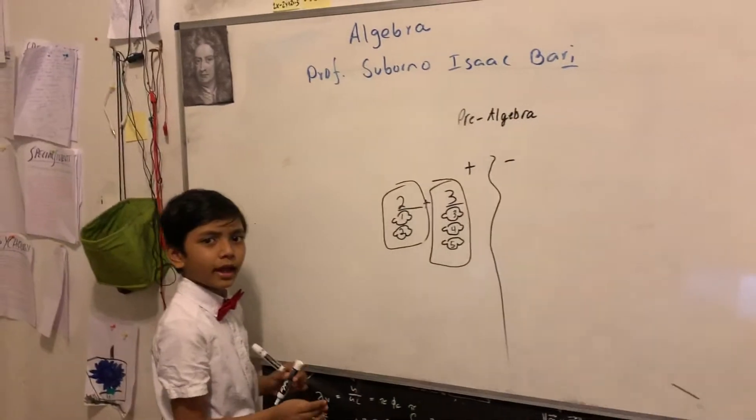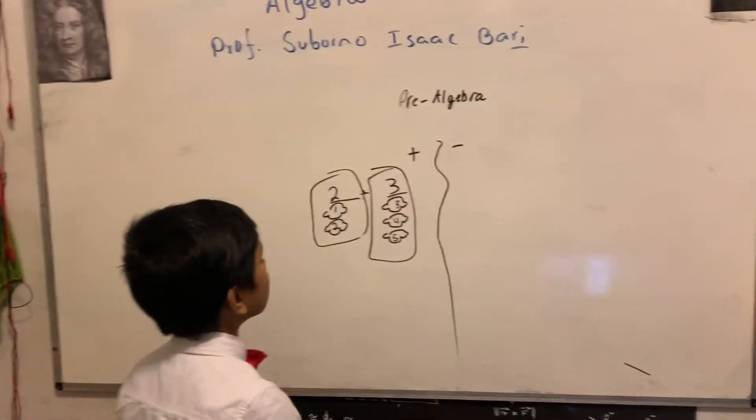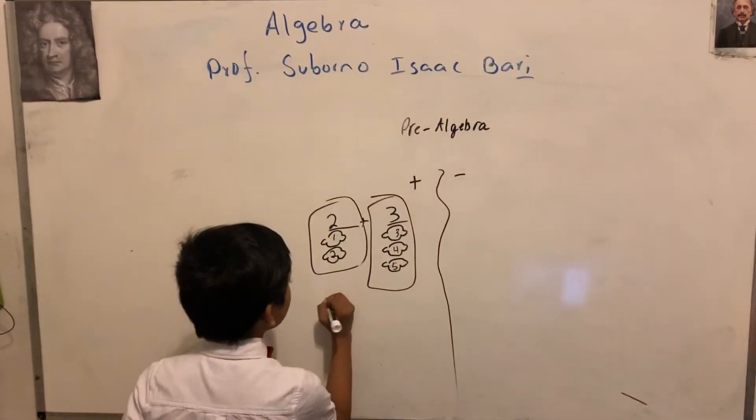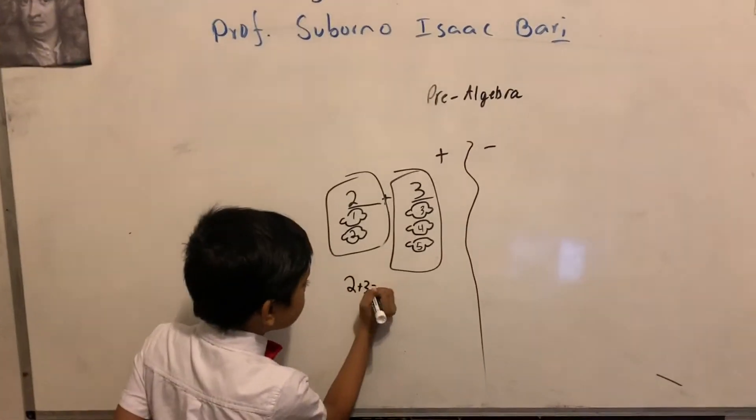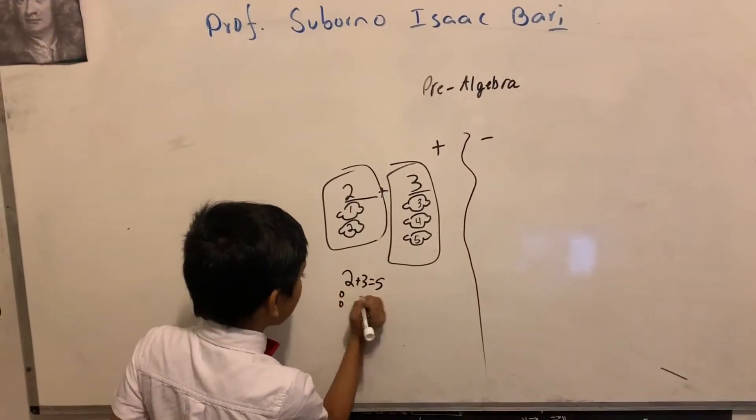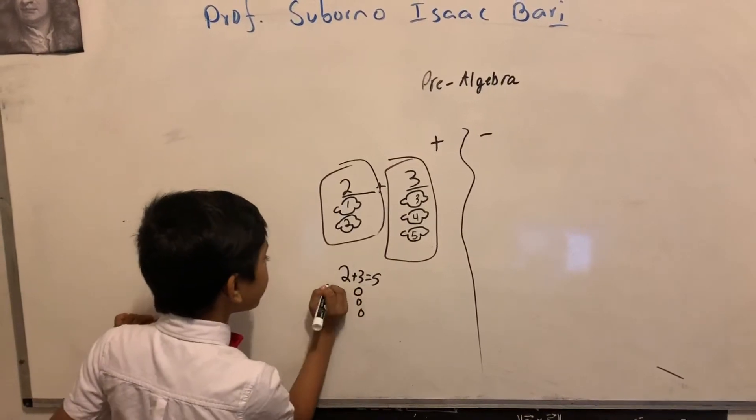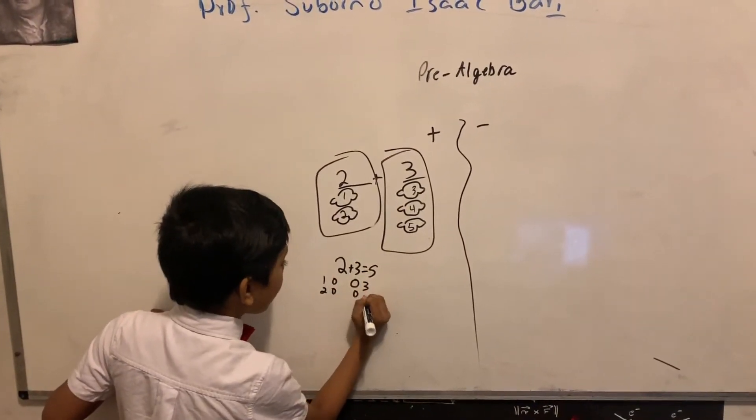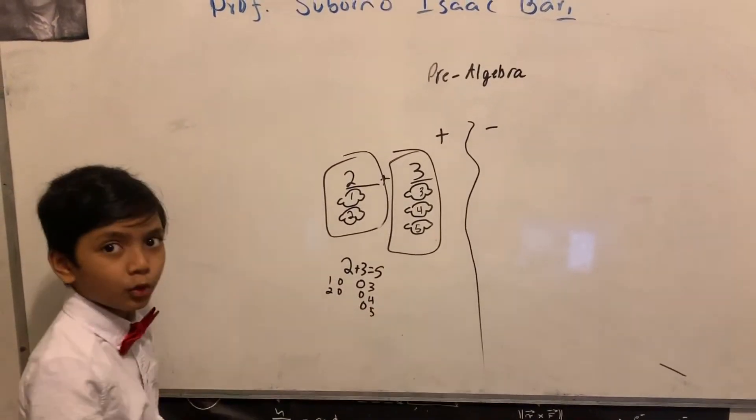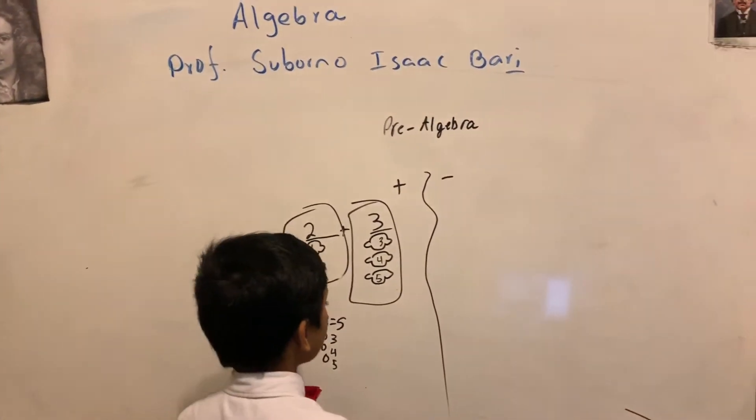So, but for now, we're going to stay simple. So, two plus three is five, because a group of two and a group of three combined has five in total, makes a group of five.